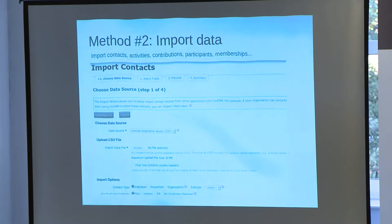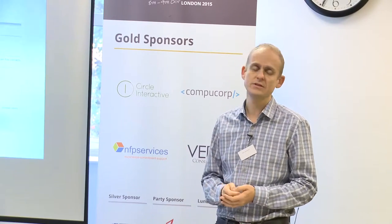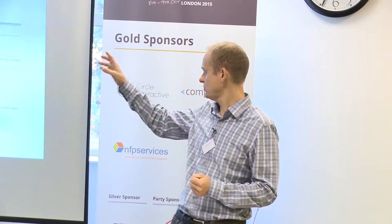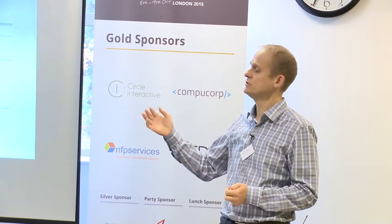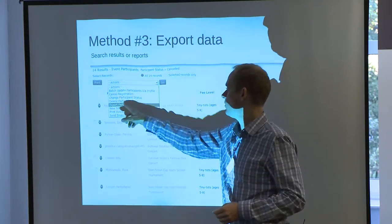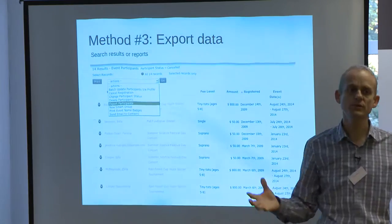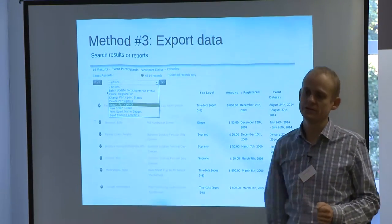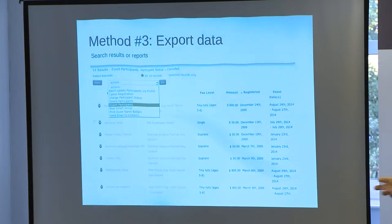Within this interface, there are several ways to import data. If you have an Excel sheet with a list of contacts you want to input into the system, you can just import it. There are several menus where you can import contacts with activities, contributions, participants, memberships, and so on. If you want to get data out of the system, you can use the menus and export the complete result of your search query or just selected records.